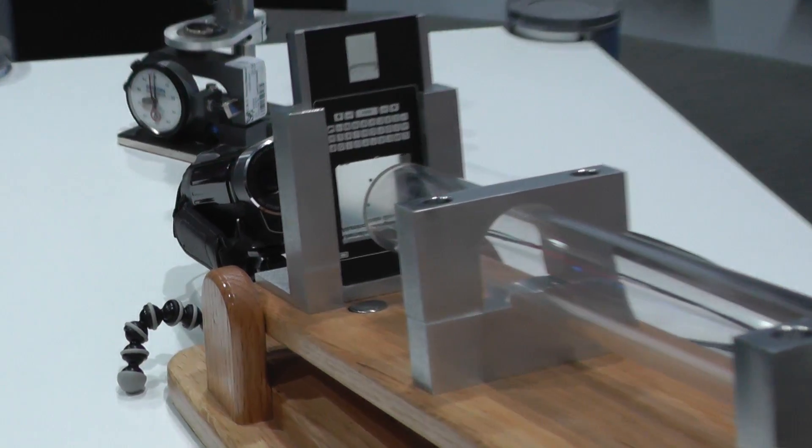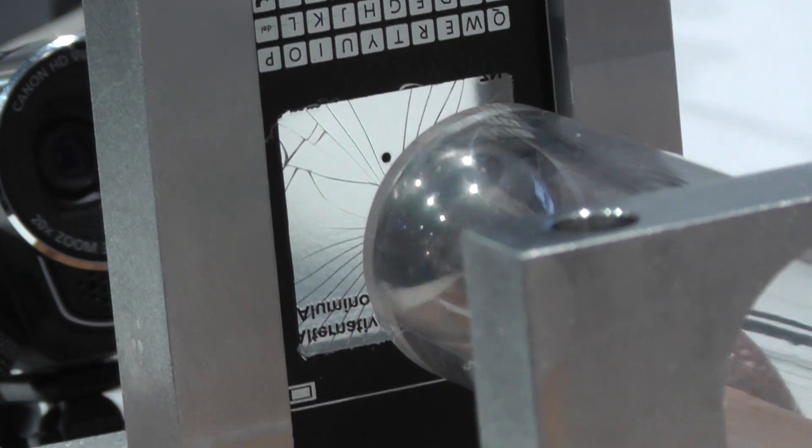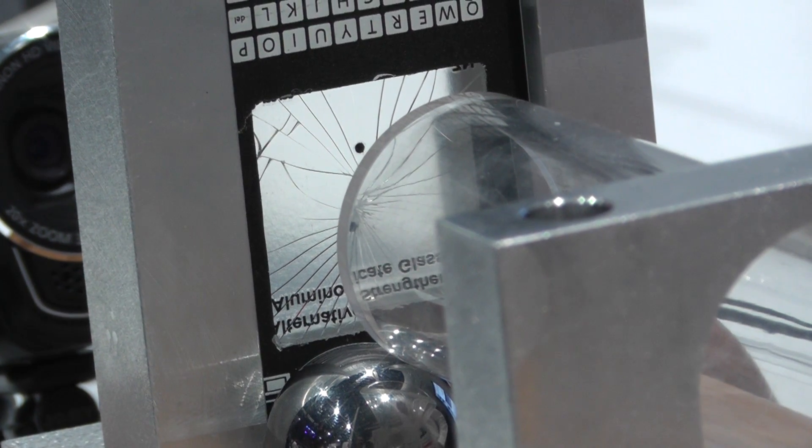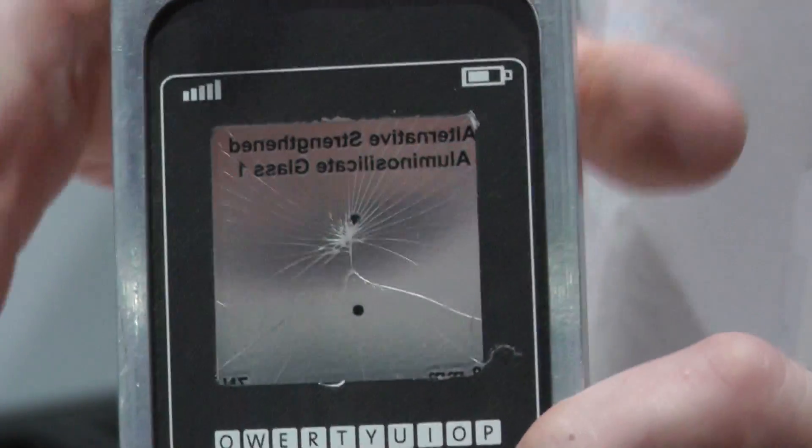This is the alternative aluminum silicate. We're going to release the ball. You can see that sample of glass did not survive the impact. This is characteristic of a scratch that has strength-limiting flaws in it.